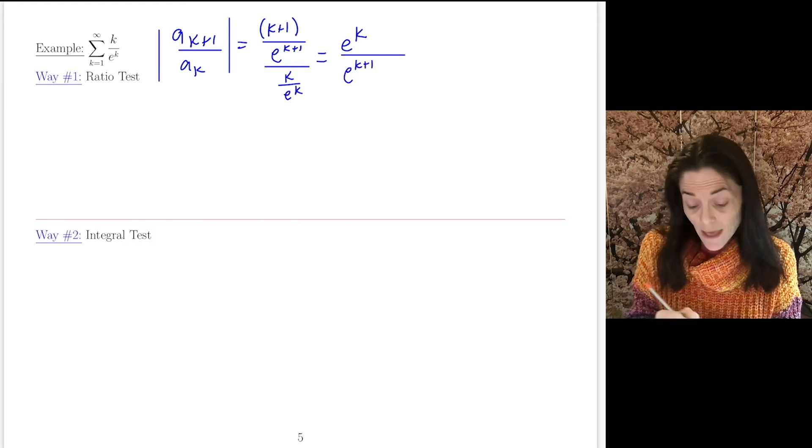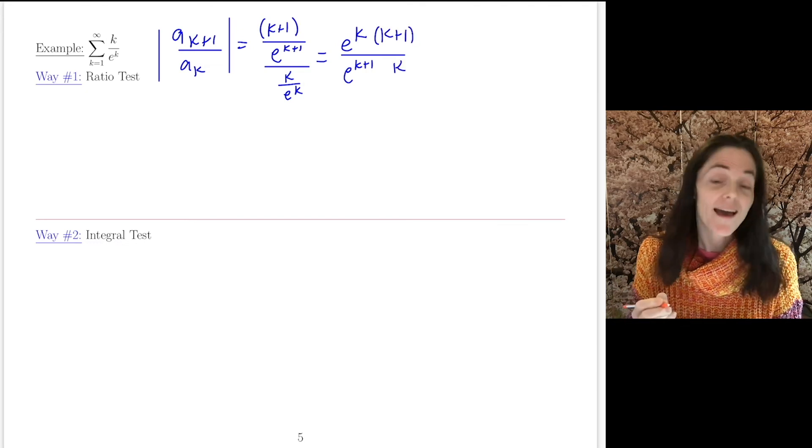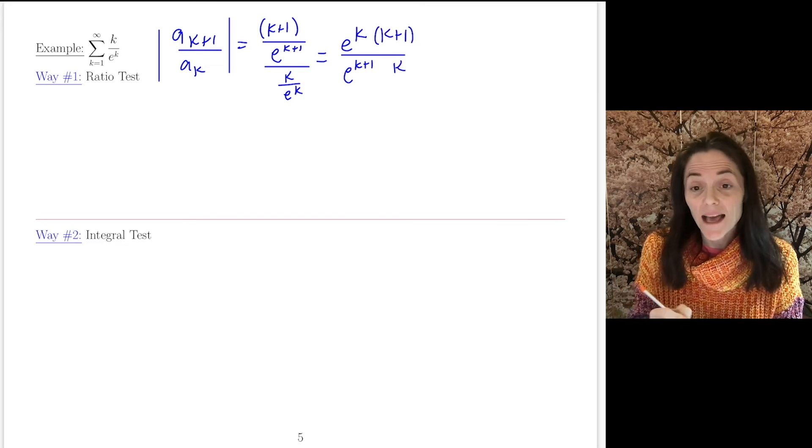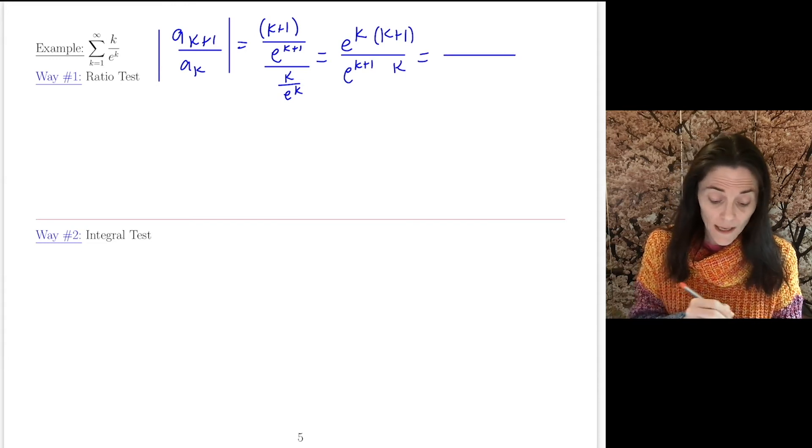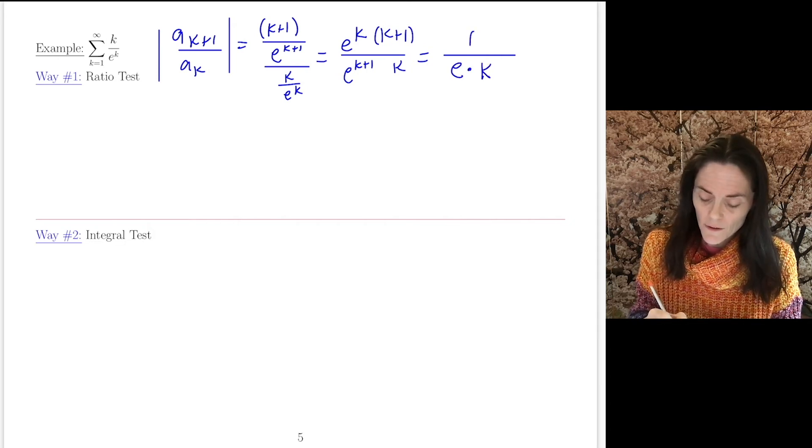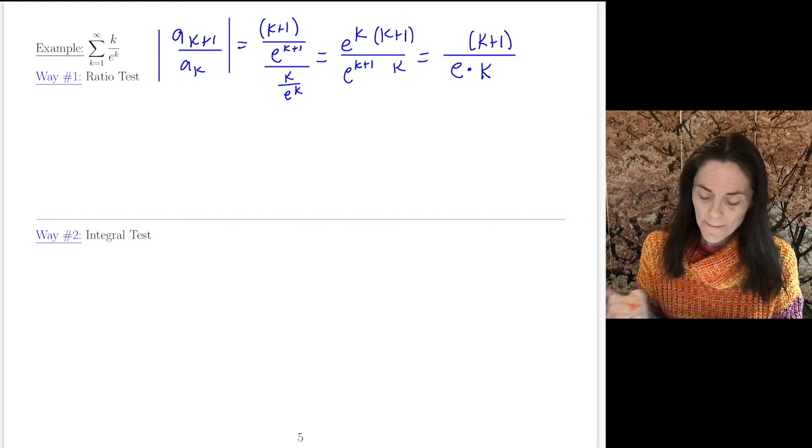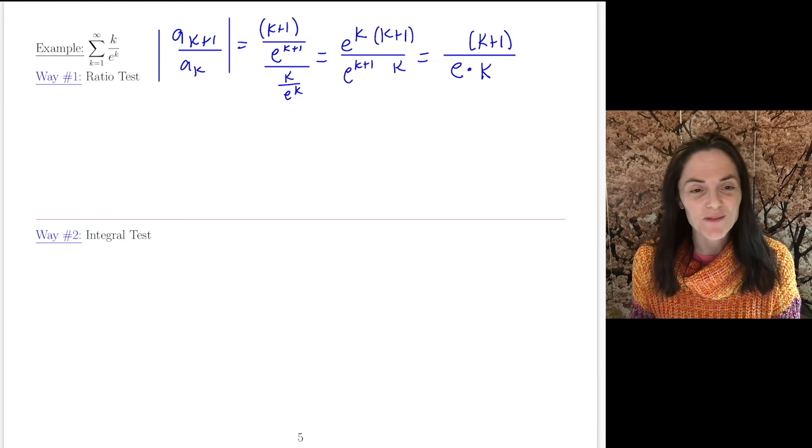In my denominator, I have an e^(k+1). In my numerator, I have a k+1. And in my denominator, I have a k. Now, I am left with e^k over e^(k+1). We have an e in the denominator. This is this quantity. Absolute value, a_k+1 over a_k.